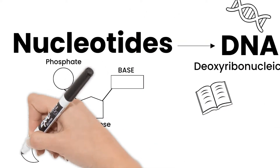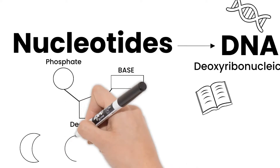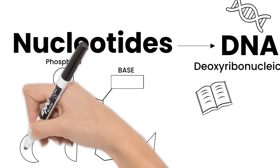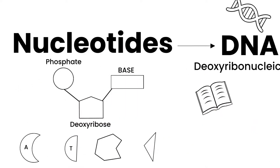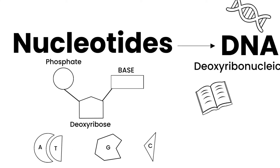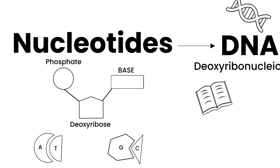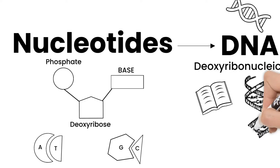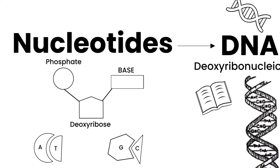There are four types of nitrogen bases: A, T, G, and C. A always pairs up with T, and G always pairs up with C. These attractions between bases are what helps form the double helix shape of DNA.